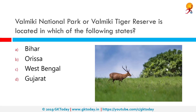Valmiki National Park or Valmiki Tiger Reserve is located in which of the following states? The correct answer is Bihar. Valmiki National Park, Tiger Reserve and Wildlife Sanctuary is located at the India-Nepal border in the West Champaran district of Bihar, India, on the bank of the river Gandak. It is the only national park in Bihar.